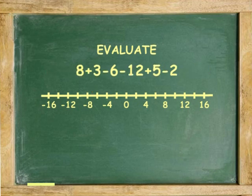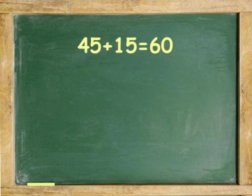Another example, evaluate 8 plus 3 minus 6 minus 12 plus 5 minus 2. Starting at zero, move 8 to the right, 3 to the right again, 6 to the left, 12 to the left, 5 right, 2 left. The answer is negative 4.